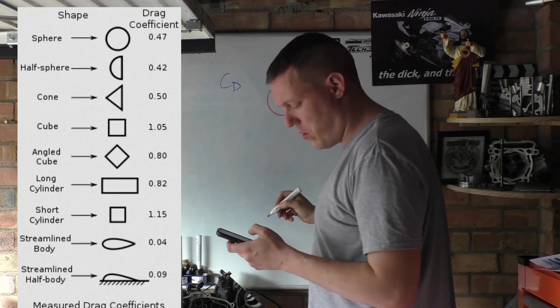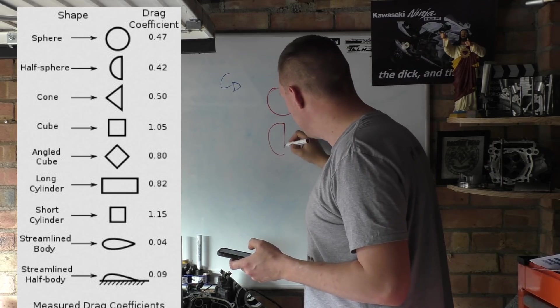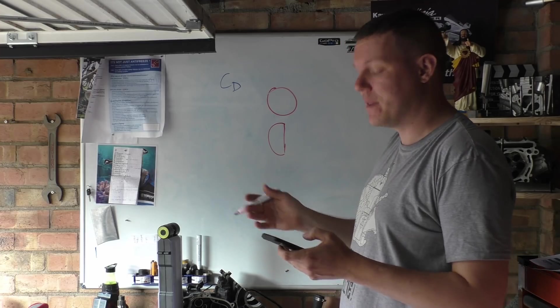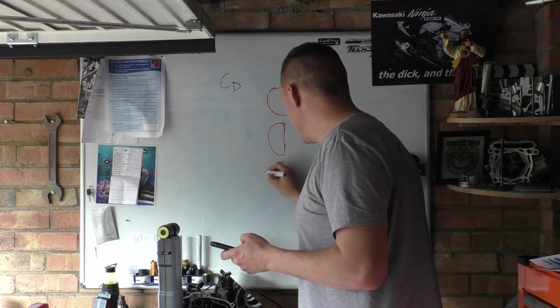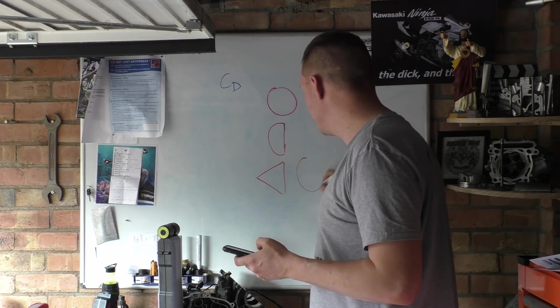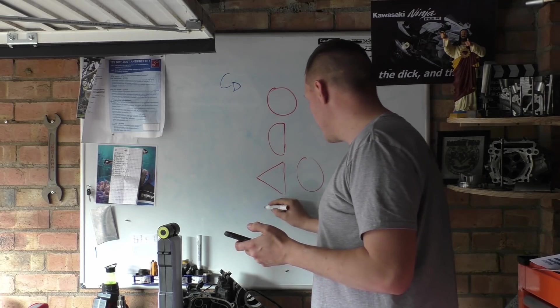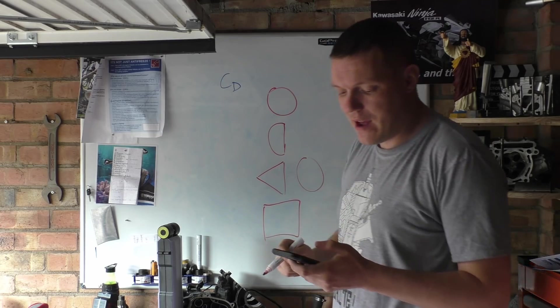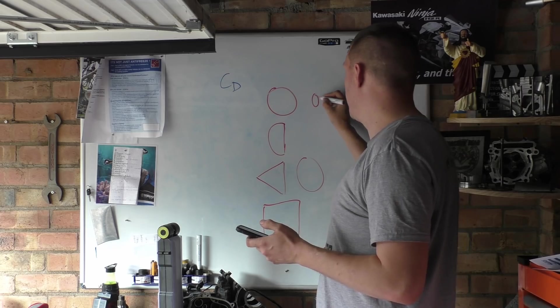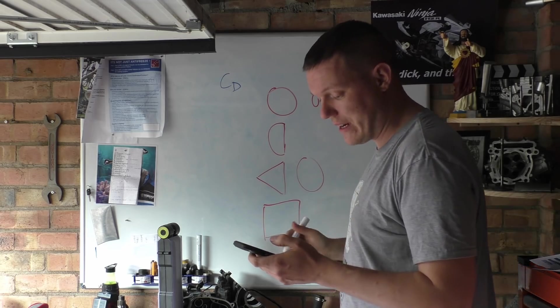If you look on Wikipedia, it has this picture when it talks about the coefficient of drag. It has a ball, a hemisphere, a cylindrical cone, a cube and all that. It'll say 0.47, 0.42 for the coefficient of drag, not friction—drag.